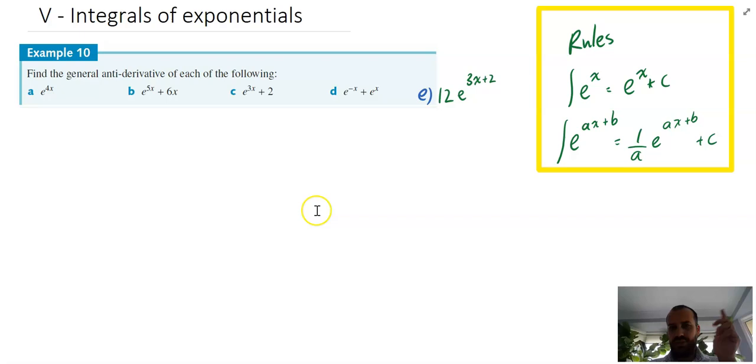Two rules that we need to write down. The integral of e to the x is equal to e to the x plus c, of course. And the integral of e to the ax plus b is equal to 1 over a times e to the ax plus b plus c.